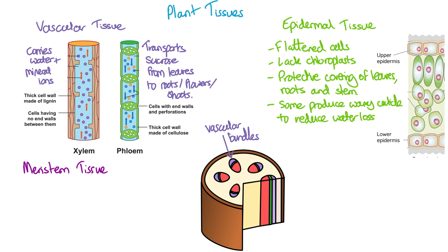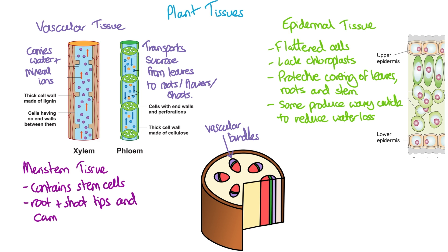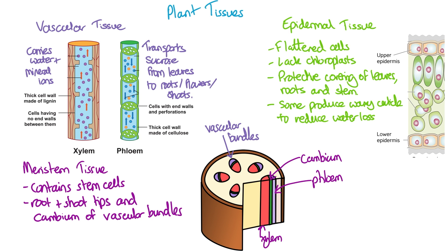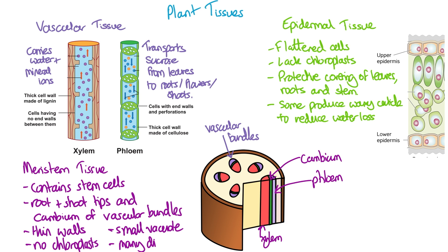Meristem tissue contains stem cells. It is found in the tips of roots and shoots and the cambium of vascular bundles. The cambium is found between the phloem and xylem in the middle of the vascular bundles. The cells of meristem tissue have thin walls and no chloroplasts, and this is where differentiation takes place to produce new vascular tissue or new cells at the tips of roots and shoots. The cells have small vacuoles, and wherever you look at this tissue you will see many dividing cells.